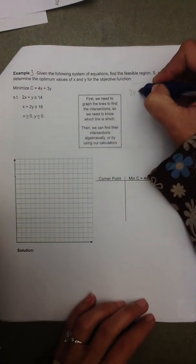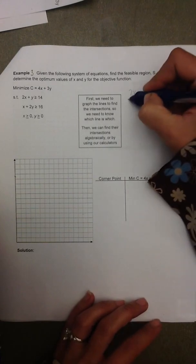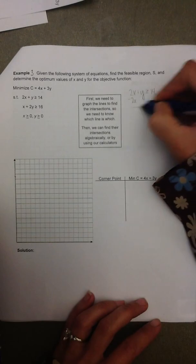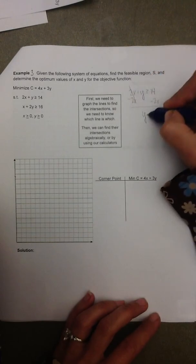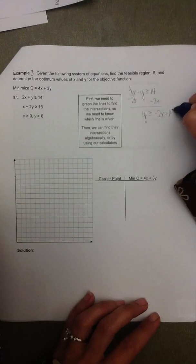So starting off with 2x plus y is greater than or equal to 14, we simply subtract 2x from both sides, and we get y is greater than or equal to negative 2x plus 14.